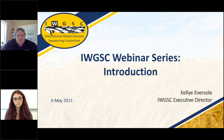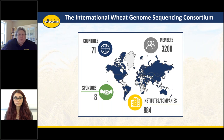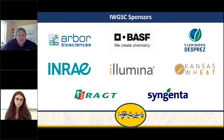Before we get into the webinar, I'll give you a short overview of the International Wheat Genome Sequencing Consortium. We have over 3,200 members in 71 countries, eight sponsors, and we work with almost 900 research institutes and companies. Our sponsors — Arbor Bioscience, BASF, Flora Mondepre, Enra E, Illumina, Kansas Wheat, RAGT, and Syngenta — make these webinars possible.